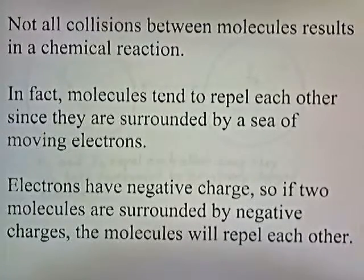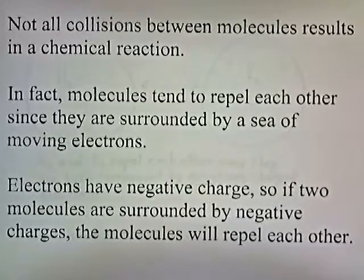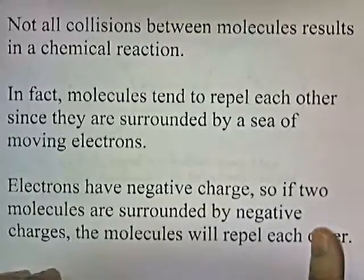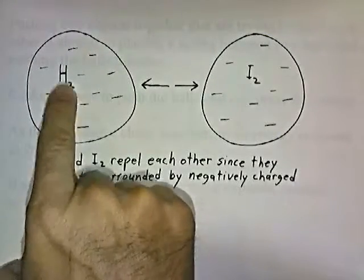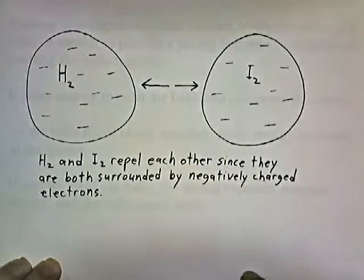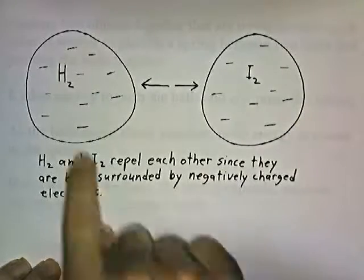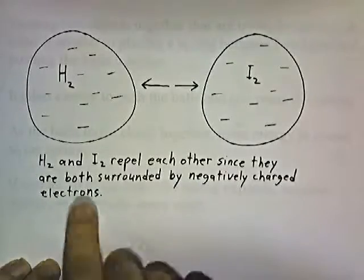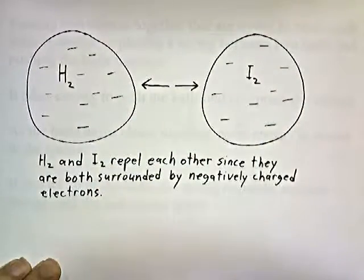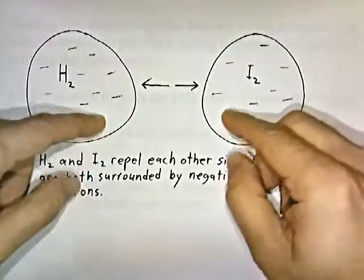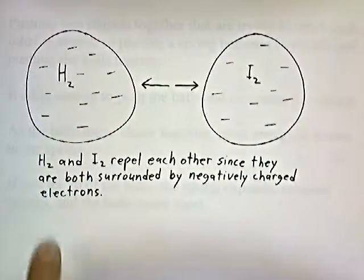Not all collisions between molecules result in a chemical reaction. In fact, molecules tend to repel each other since they're surrounded by a sea of moving electrons. Electrons have a negative charge, so if two molecules are surrounded by negative charges, the molecules will repel each other. Here's a picture of a hydrogen molecule surrounded by a sea of moving electrons, and iodine also surrounded by moving electrons. H2 and I2 repel each other since they are both surrounded by negatively charged electrons.